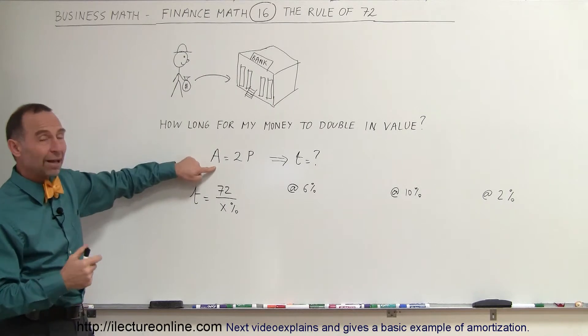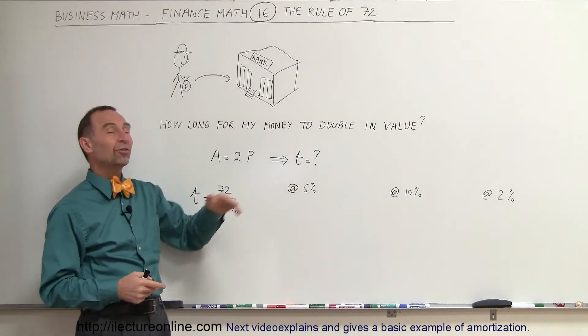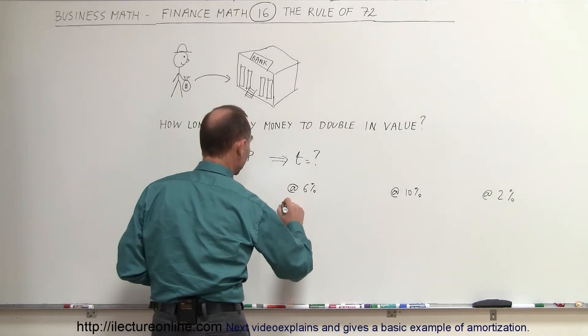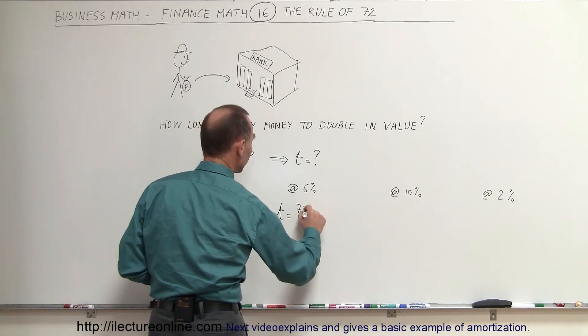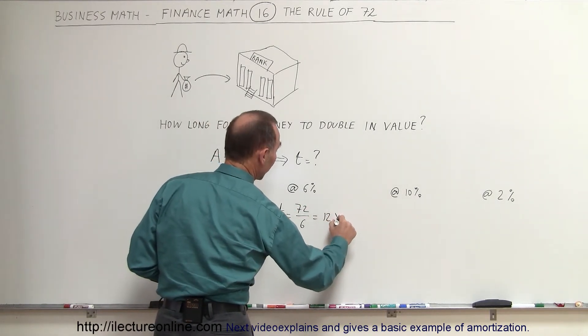You want the amount that you accumulate to be twice the principal that you invest, and the question is how much time will it take. Let's say that you invest your money at 6%, so the time would be equal to 72 divided by 6, which would be 12 years.